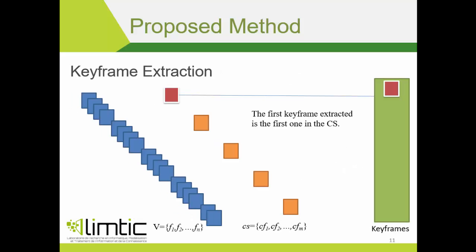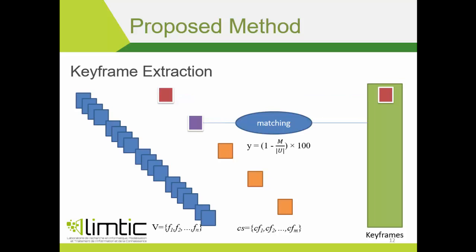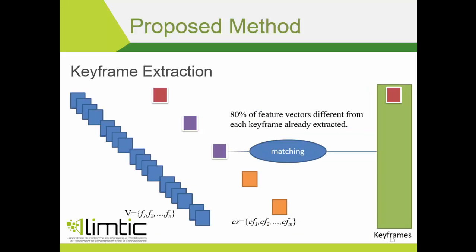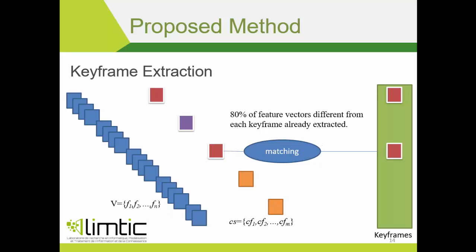The first keyframe extracted is the first one in the candidate set. Then each frame in the candidate set is analyzed. A frame will be considered a keyframe only if it has more than 80% of its feature vectors different from each keyframe already extracted.